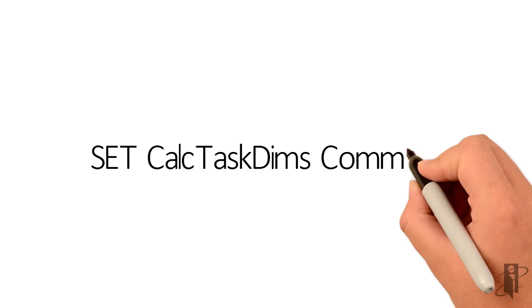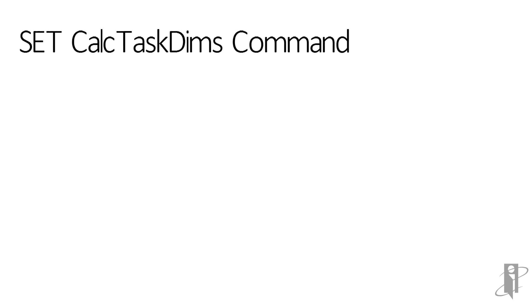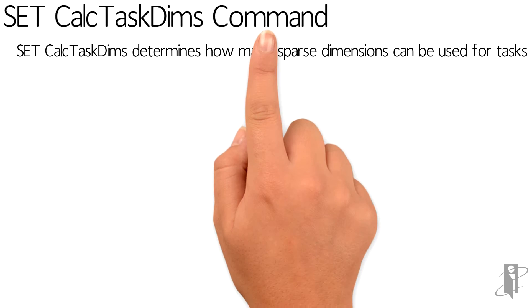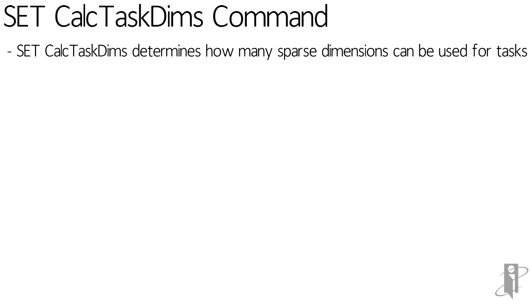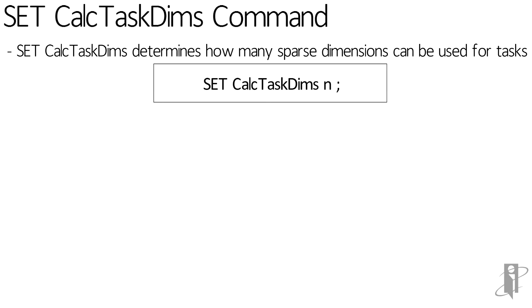Let's say your outline has three sparse dimensions at the end of the outline: scenario, version, and year. By default, S-Base is only going to use one of those. So if year is your last dimension, it's just going to use that dimension to parallelize along.